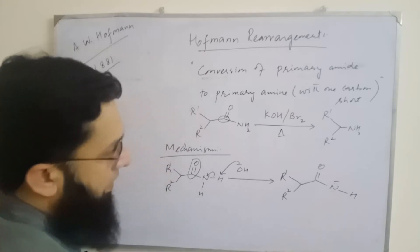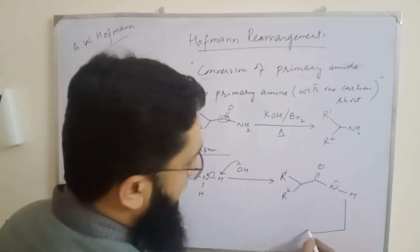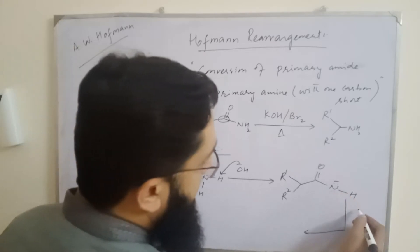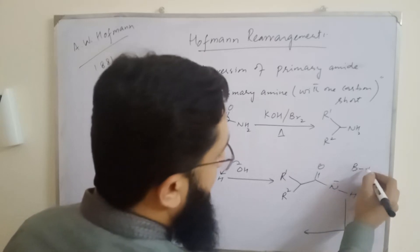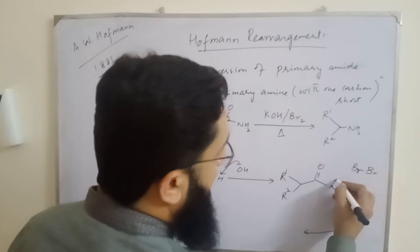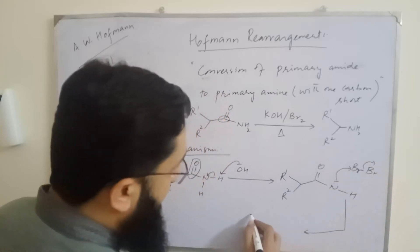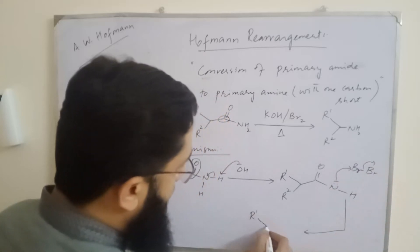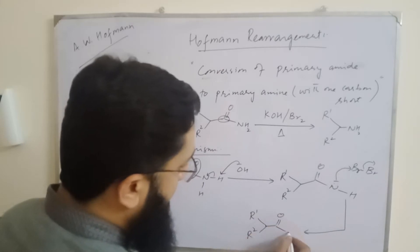In the next step, this negative charge reacts with bromine, and we get an N-bromo acetamide derivative.